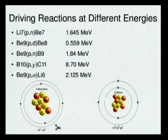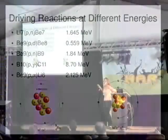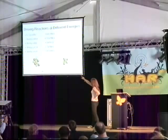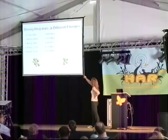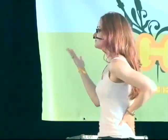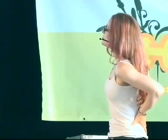A brief look at different reactions you can drive at different energies. This is nuclear reaction notation. Looking at the first one: lithium-7 goes into beryllium-7 — the P,N in the middle means you're slamming a proton into the lithium-7 and you get out a neutron and beryllium-7. For the next one: beryllium-9 plus a proton gives you a deuteron and beryllium-8.